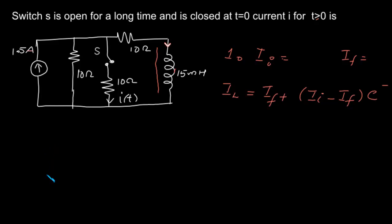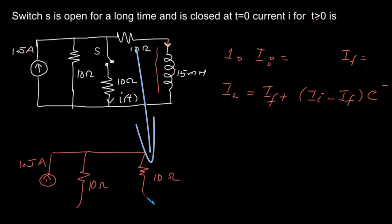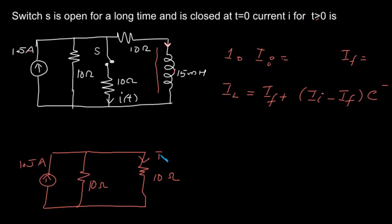We can draw the equivalent circuit: 1.5 amps coming in, a 10 ohm resistor, and another 10 ohm resistor. The inductor is shorted out. So we have 1.5 amps and two equal resistors, and the current gets equally divided. Therefore, we have 0.75 amps as the initial current.